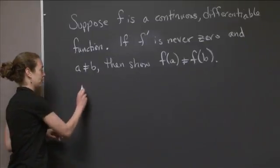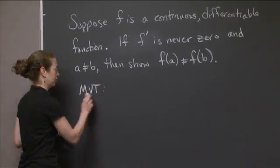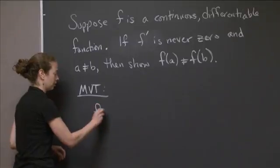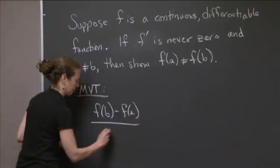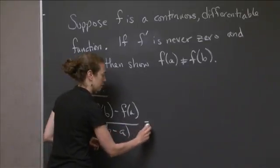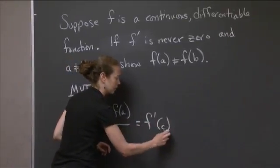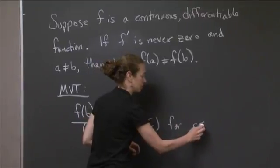So what do we know? The Mean Value Theorem tells us that if we look at—well, let's just write it out: f(b) minus f(a) over b minus a equals f'(c), for some c between a and b.